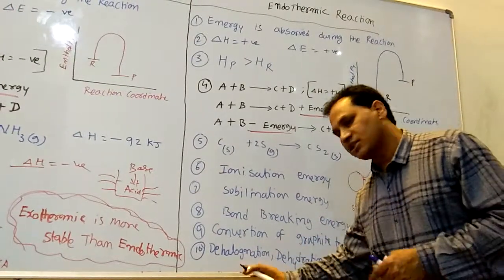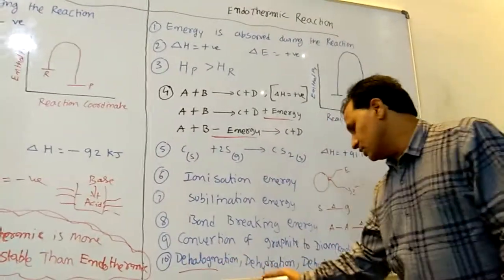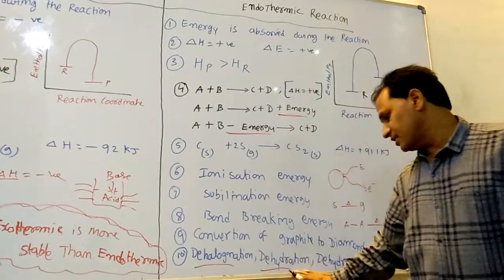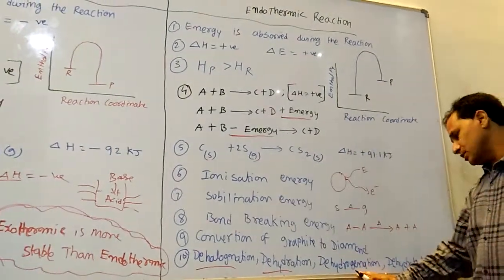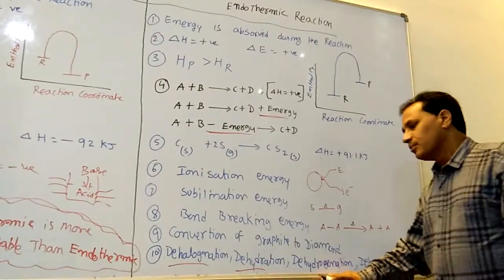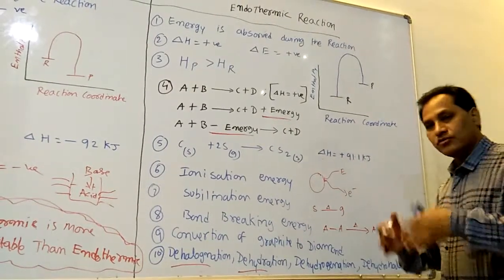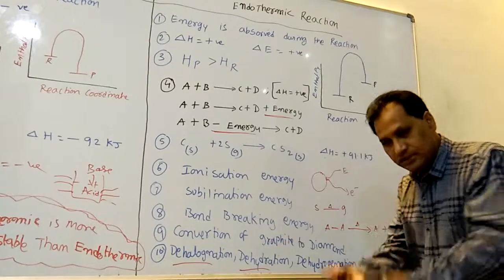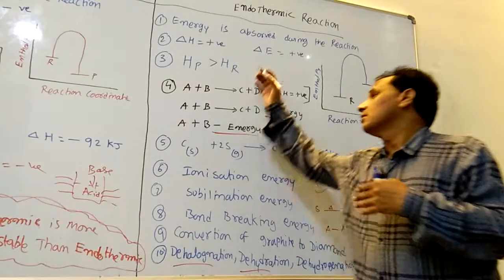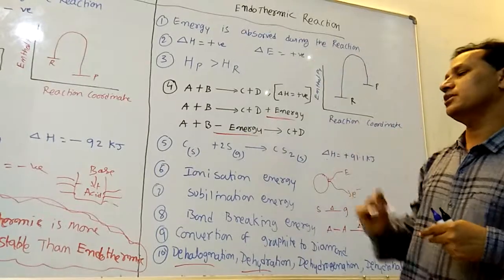Dehalogenation means removing of halogens, and dehydrogenation means removing of hydrogen — both require energy input. The system absorbs the energy supplied, which is why dehalogenation and dehydrogenation are endothermic reactions.